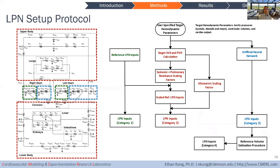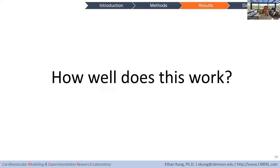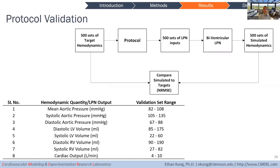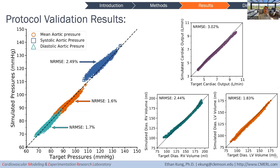Here's a summary of how everything comes together — it's somewhat complicated, so I won't go into too much detail. To validate our protocol, we generated 500 sets of realistic target hemodynamic parameters, used our protocol to generate 500 sets of LPN parameters, fed these into the actual LPN circuit to run the model, obtained simulated hemodynamics, and compared the simulated results with the targets to see how close they are.